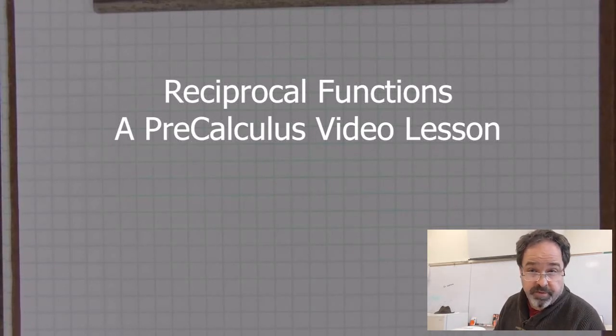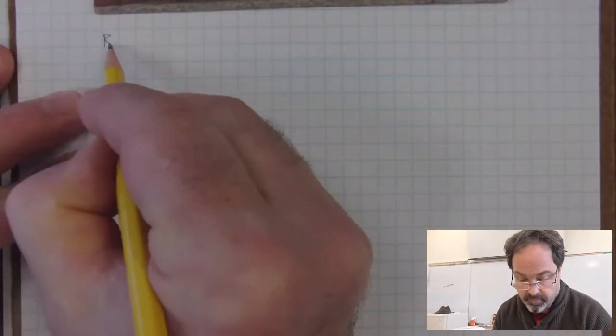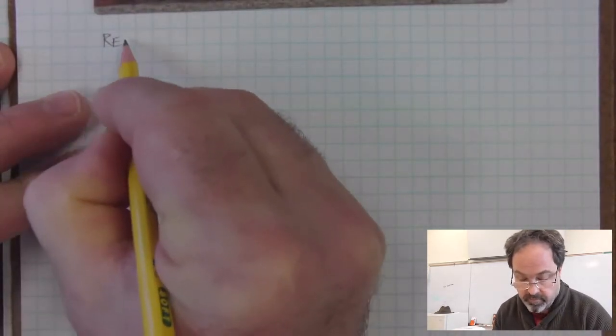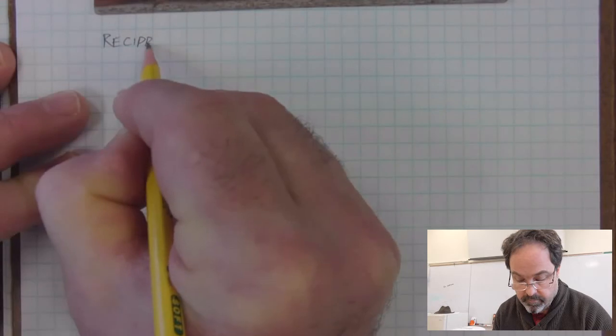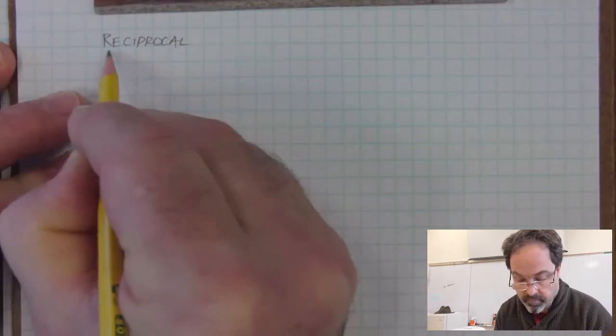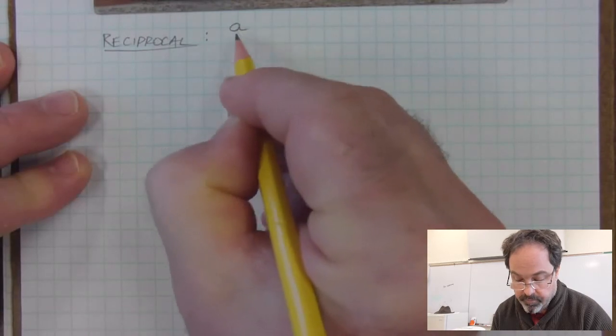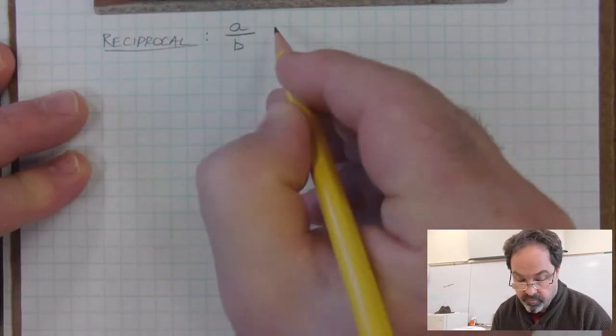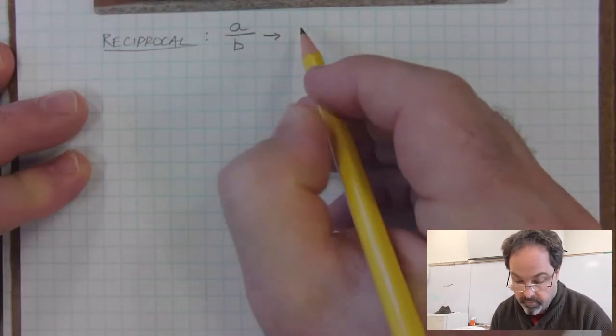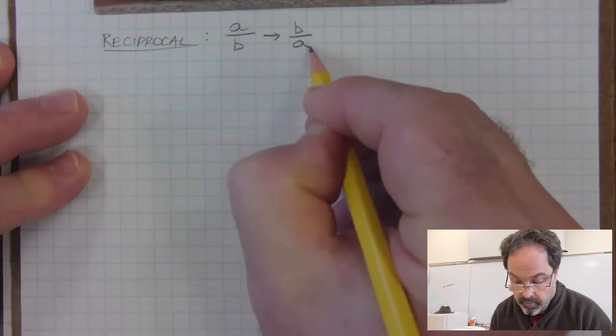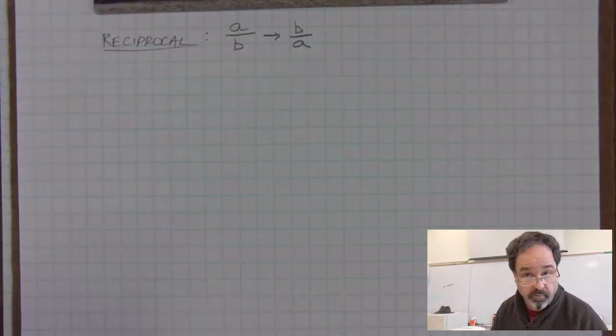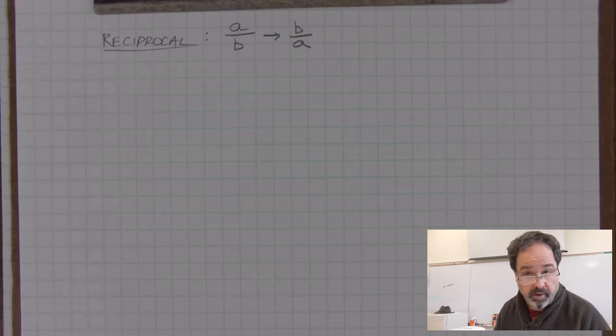This is a video lesson on reciprocal functions. Let's remind ourselves what a reciprocal is. A reciprocal is what we can do with a fraction. We switch numerator and denominator. So if we have a fraction a over b, its reciprocal is b over a.